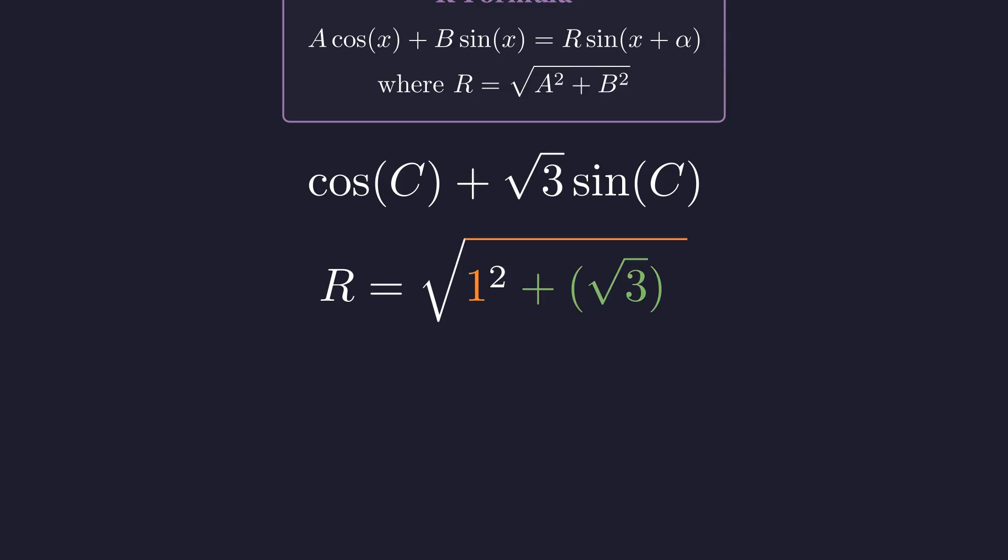Let's evaluate those squares under the square root. One squared gives us 1. The square of square root of 3 gives us 3. So we get square root of 4, which equals 2.